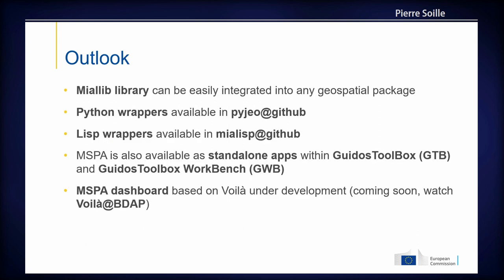As an outlook, the mia lib library can be easily integrated into any geospatial package. Python wrappers are available at the address provided in the slides, as well as for Lisp — because initially this project was coded in Lisp. The MSPA is also available as a standalone pre-compiled application within the GUIDOS Toolbox spatial pattern analysis, a freeware which includes the workbench as well. There is also an MSPA dashboard based on Voilà under development, coming soon.